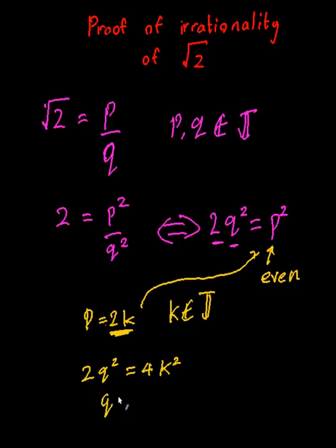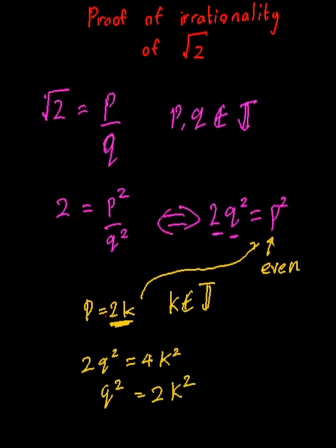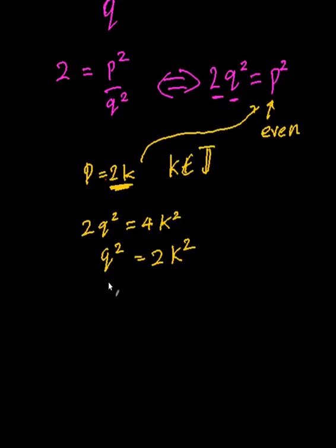Basically which means that Q squared is equal to 2K squared. Now again, because we're talking about integers, this Q squared—if it's equal to 2K squared—must mean that Q must be even.